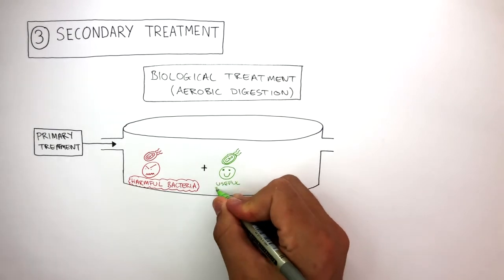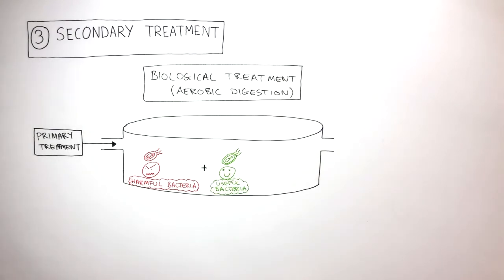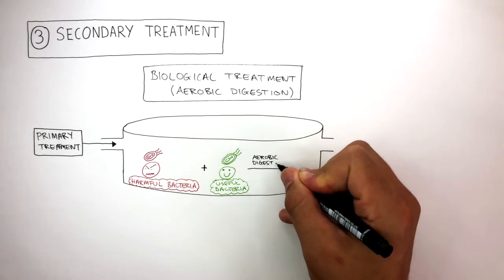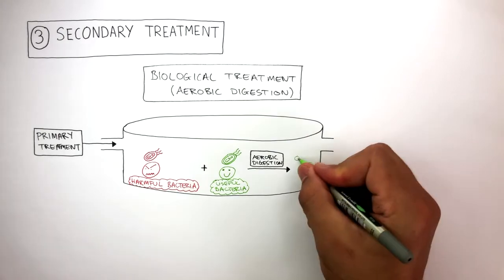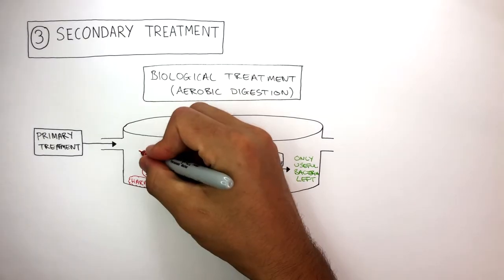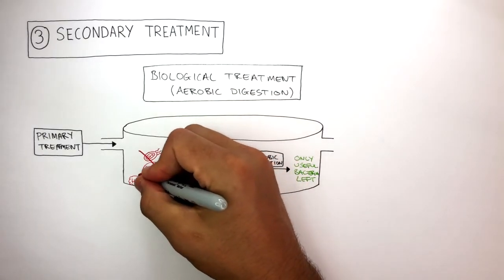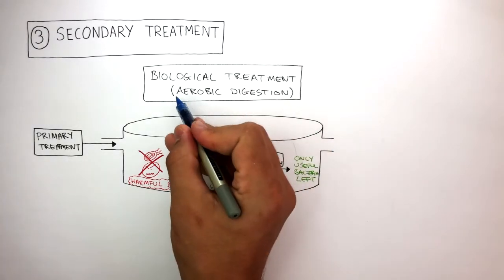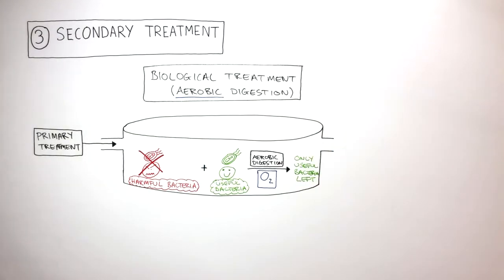These useful bacteria feed on the harmful bacteria and remaining organic matter by aerobic digestion, where only the useful bacteria remain once all harmful bacteria has been digested. Aerobic digestion is in the presence of oxygen, which is why it is called aerobic digestion, as aerobic means with oxygen.